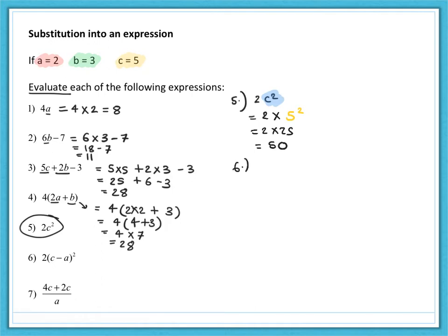Number six, we have two lots of c minus a all squared in the question. So let's substitute into the values inside the bracket. So that's two lots of five minus two all squared, which is two lots of three squared. And BIDMAS again tells us do the squaring first. So that's two lots of nine, which is 18.